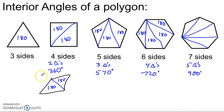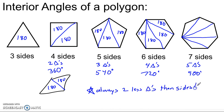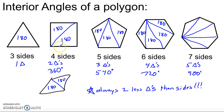So what's going on here? There are always two fewer triangles than sides. If you think about how we make a polygon, that makes sense — it takes three sides just to get one triangle. As soon as I add another side, I get another triangle; add another side, another triangle, and so on. So there's always two fewer triangles than sides.